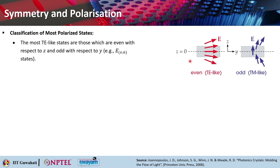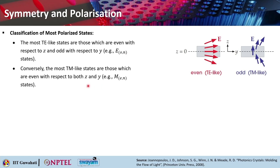We can further classify the most polarized states. Most TE-like states are those which are even with respect to the z equals 0 plane and odd with respect to y equals 0 — those can be called E-odd-n kind of states. Conversely, TM-like states are even with respect to both z and y, and can be called M-E-N states, where N is the band number.